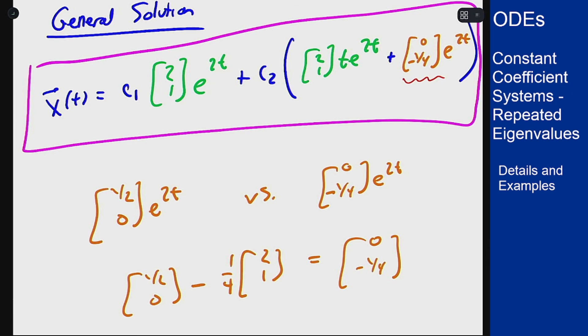That's the setup for these general solutions and how you get them from the eigenvector and generalized eigenvector for a repeated eigenvalue.